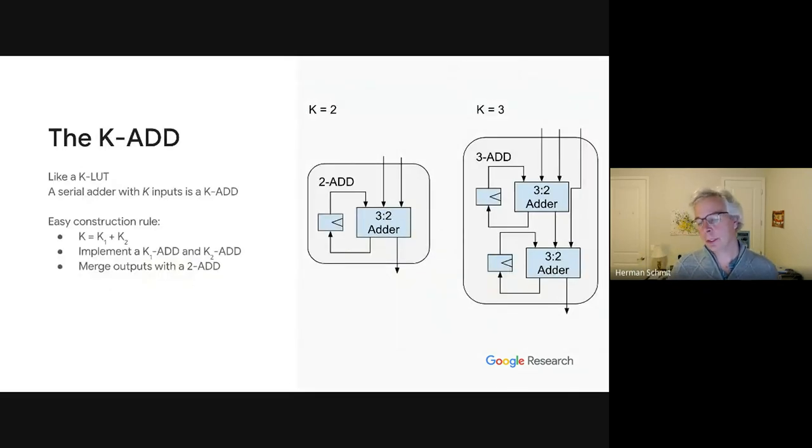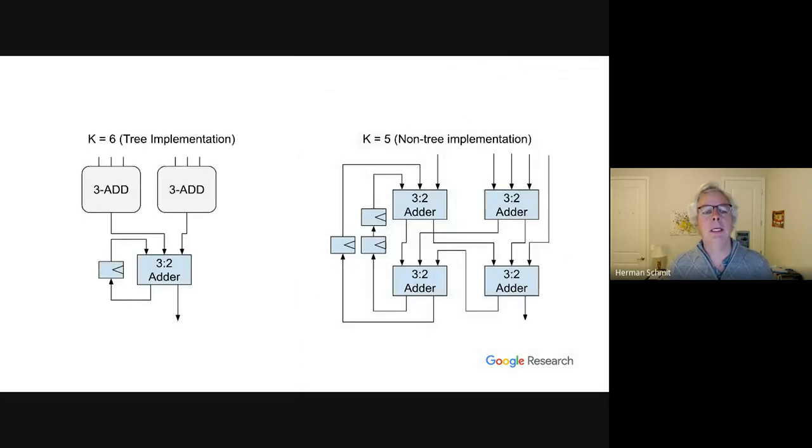This slide shows the base case of K equals 2, a simple K equals 3, which is sort of an unbalanced tree, a K equals 6 implementation, which uses that 3 add. And it's also worth noting that this construction methodology of using the tree is not always the most efficient. There seems to be some cases where K enables different implementations than you would find with the tree, as shown here with K equals 5.